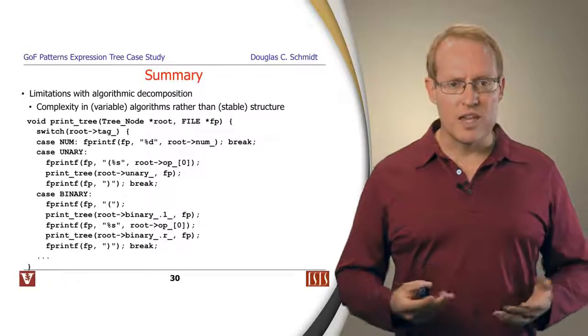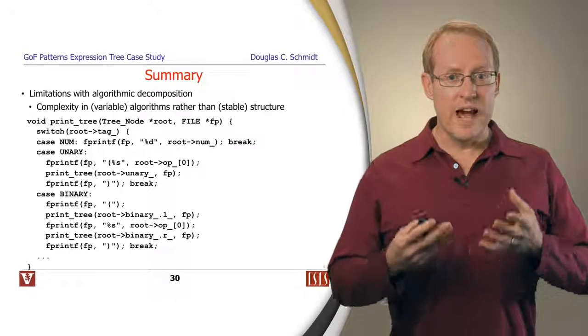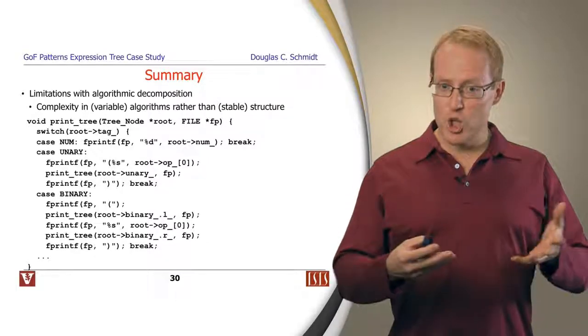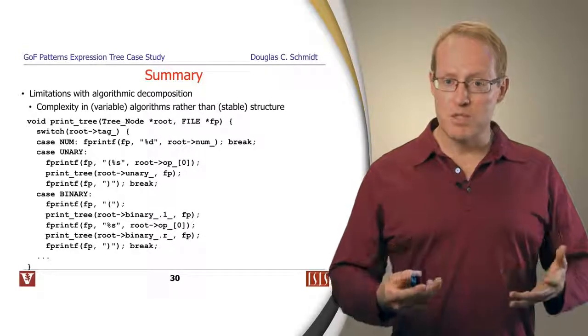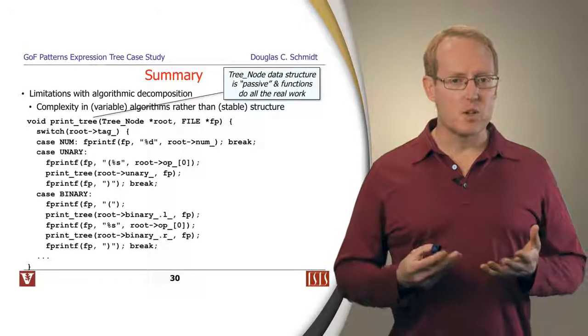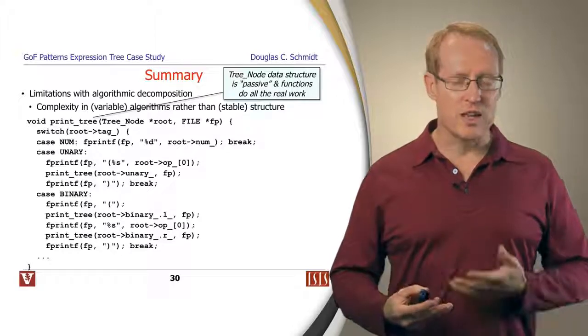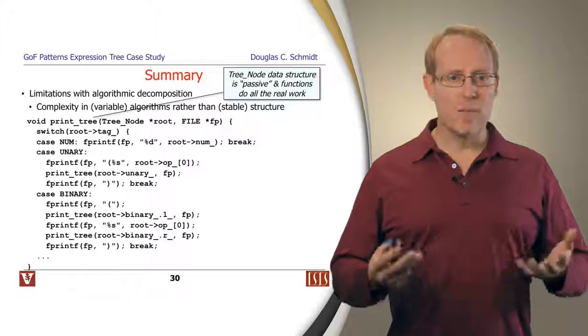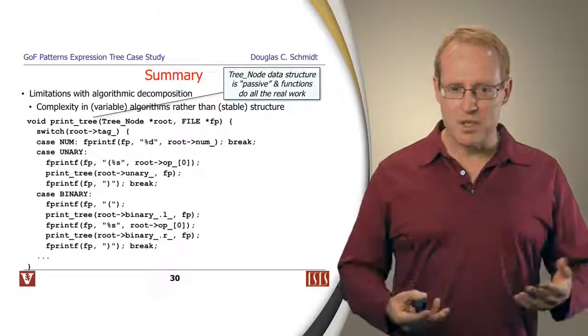Another set of problems we have, another limitation with an algorithmic approach, is that the complexity tends to be put in the algorithms, which vary and change, instead of being in the structure, which tends to be more stable. For example, the tree node data structure is passive. It just sits there and lets the various functions, like print tree and so on, rampage through it, access the field in any way they want, break encapsulation and so on.